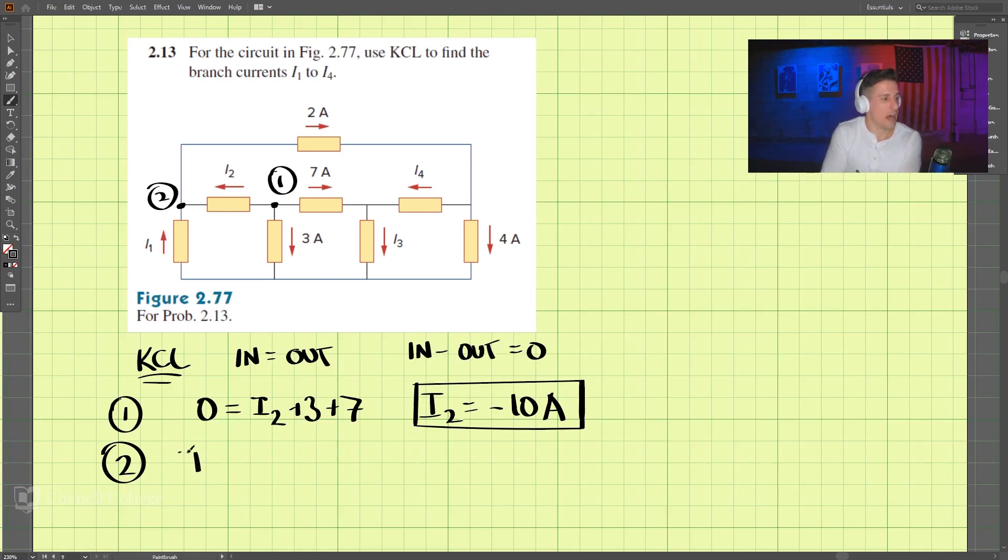So we have in, we have I1 plus I2, I2 is going in, and then out is negative 2. So minus 2 here equals 0, in minus out. Okay? And by doing this, we put in here, we put in negative 10, negative 10 into there. And I1 is 12 amps.